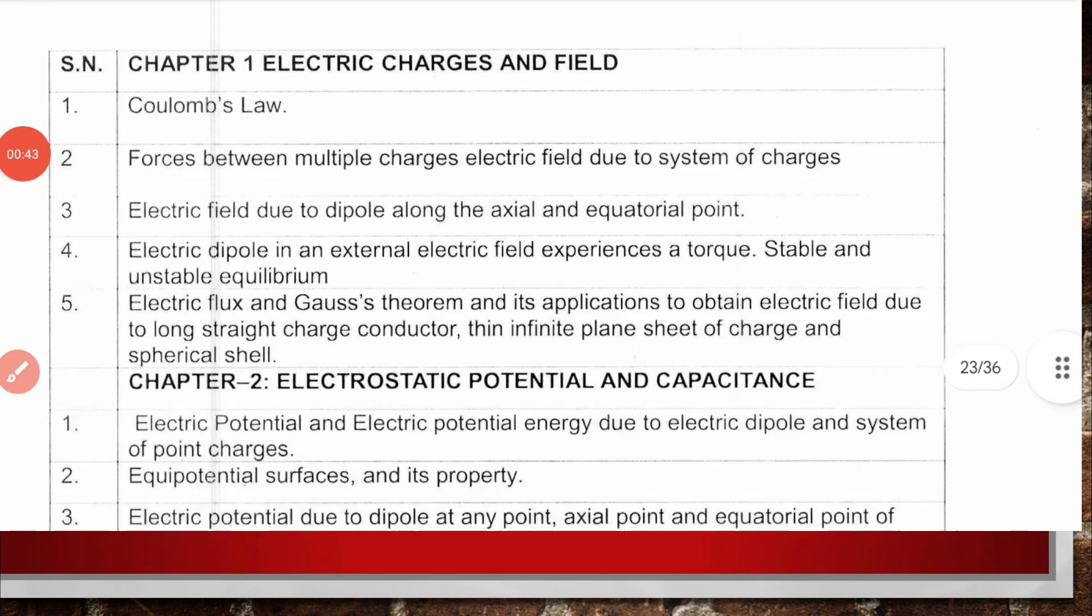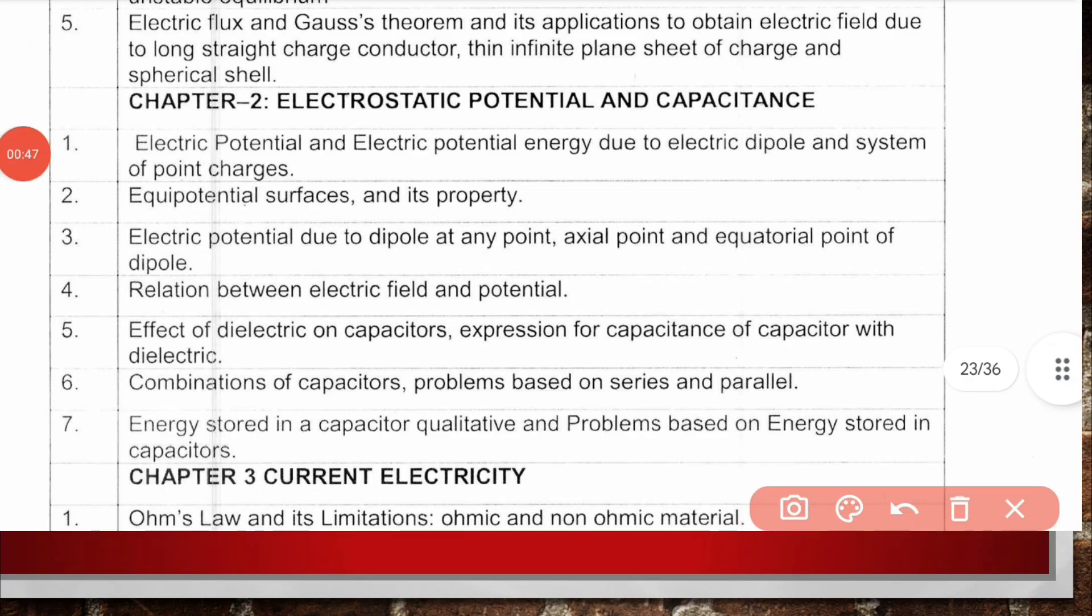Chapter 2, Electrostatic Potential and Capacitance: electric potential and electric potential energy due to electric dipole and system of point charges, equipotential surfaces and their properties, electric potential due to dipole at any axial point and equatorial point, relation between electric field and potential, effect of dielectric on capacitors and expression for capacitance of capacitor with dielectric, combination of capacitors with problems based on series and parallel, and energy stored in capacitor both qualitative and problem based.